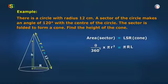And in this case, L = r. So it becomes R × r = θ/360° × r². Or R = θ/360° × r.